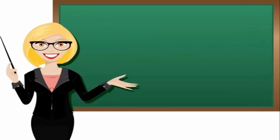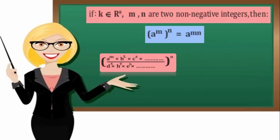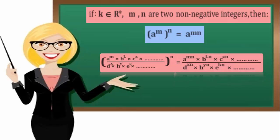Number 5: If A belongs to R star, and M and N are two non-negative integers, then A to the power M all to the power N equals A to the power MN. In general, A to the power M times B to the power L times C to the power Z over D to the power X times H to the power Y times E to the power K and so on, all to the power N, equals A to the power MN times B to the power LN times C to the power ZN and so on, over D to the power XN times H to the power YN times E to the power KN and so on.